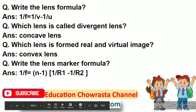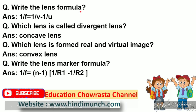Our first question: write the lens formula. The answer is: 1 by f is equals to 1 by v minus 1 by u. Here, f is the focal point, v is the image distance, and u is the object distance.